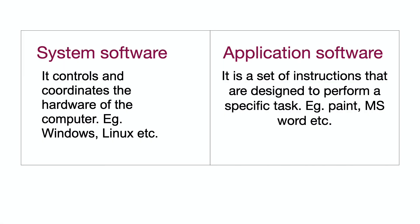What is the difference between system software and application software? System software controls and coordinates the hardware of the computer, e.g., Windows, Linux, etc. Application software is a set of instructions designed to perform a specific task, e.g., Paint, MS Word, etc.